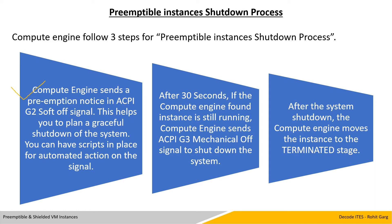In step 1, Compute Engine sends a preemption notice in ACPI G2 soft-off signal. This helps you to plan a graceful shutdown of the system. You can have a script in place for automated action on this signal. After 30 seconds, if Compute Engine finds the instance is still running, Compute Engine sends an ACPI G3 mechanical off signal to shut down the system. In step 3, after shutdown, the Compute Engine moves the instance to the terminated state. After step 1, you can have automated scripts that save your files and clean the state so that your data is saved and intact when you start that machine or use that data again.